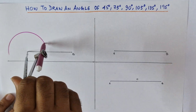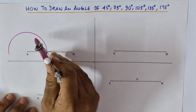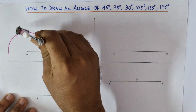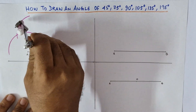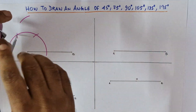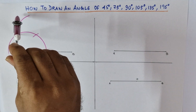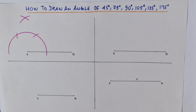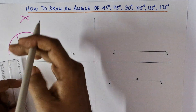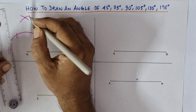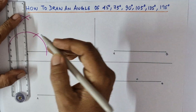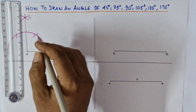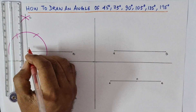We'll draw the arc and cut it here. We'll take this as center and cut the arc in the second position. We'll draw another arc with the same radius without changing it, and draw the intersection arc. So if we take this intersection point as C and join A and C, we get 90 degrees.